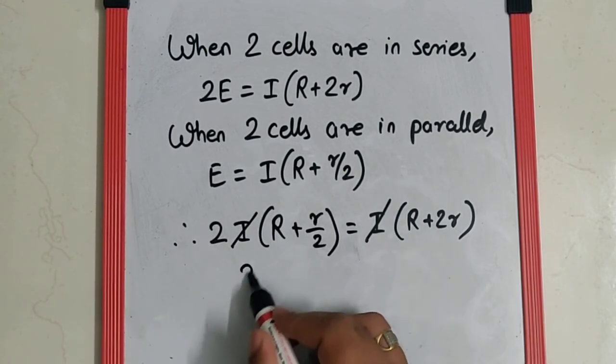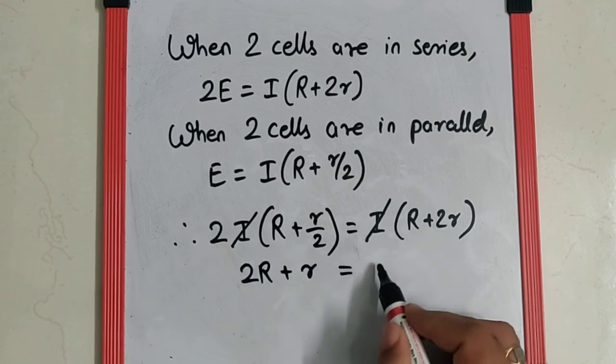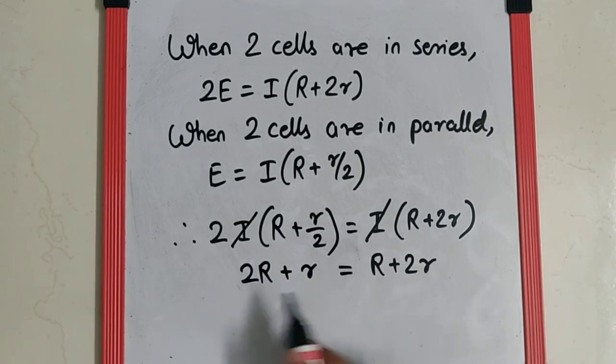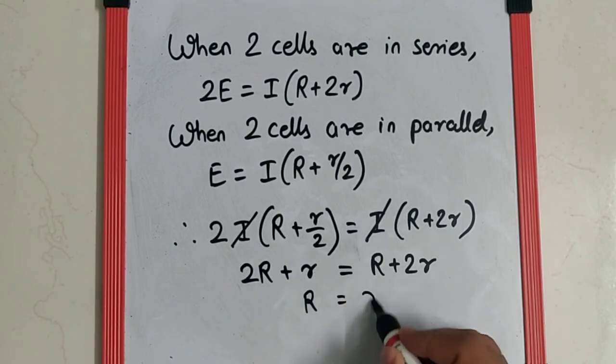Now if we open the bracket we get this as 2R plus r. This two gets cancelled and we get this as R plus 2r. So 2R minus R is R and 2r minus r is r.